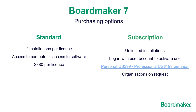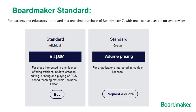Boardmaker 7 has two purchasing options. The standard option is a license which allows installation on any two Windows, Mac or Chromebook devices. Or you can purchase Boardmaker 7 as a subscription, which allows you to install on an unlimited number of computers. Regardless of which option you choose, there are free trials available. Boardmaker 7 standard can be purchased from Spectronics currently for AU$880 per license, or organisations interested in multiple licenses can request a quote from Spectronics.